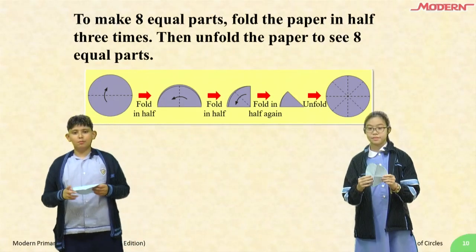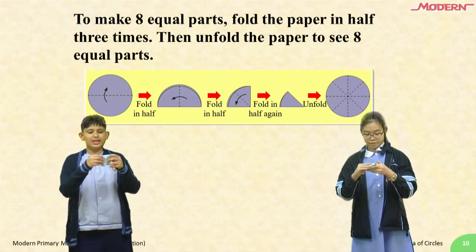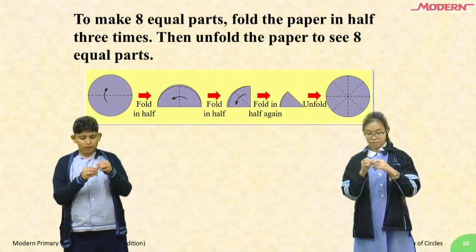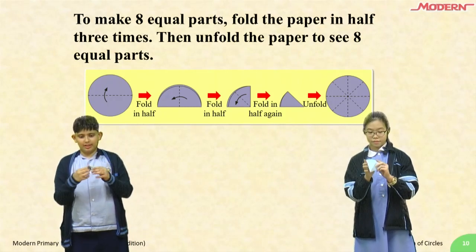To make 8 equal parts, fold the paper in half 3 times. Then, unfold the paper to see 8 equal parts.